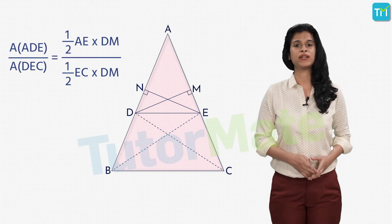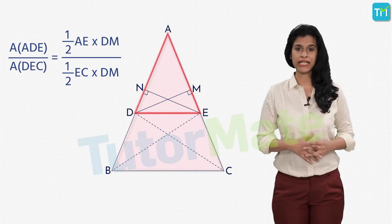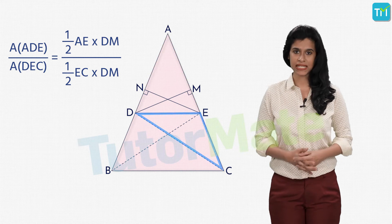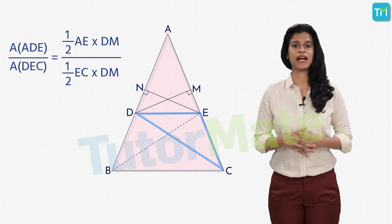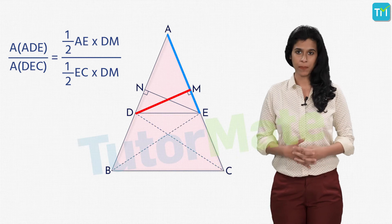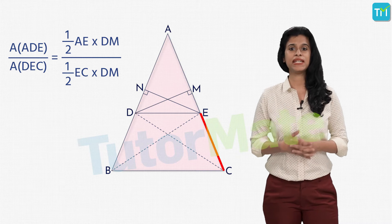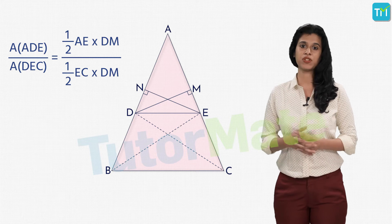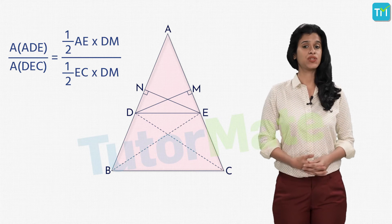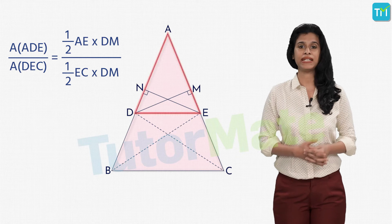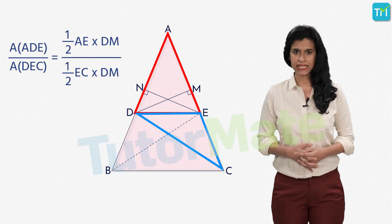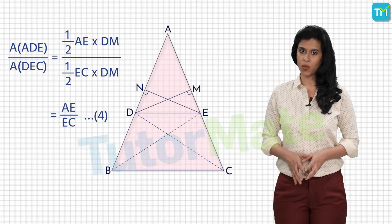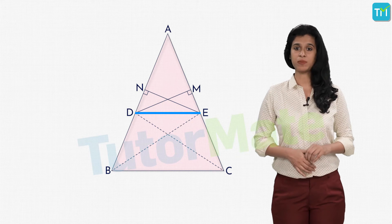Similarly, if we calculate the ratio of the area of triangle ADE per Statement 2 to the area of triangle DEC, the halves and DM cancel, and we are left with AE upon EC. We label this as Statement 4.